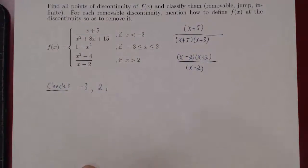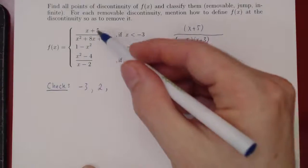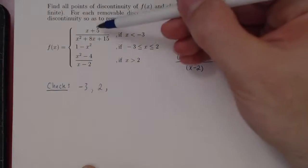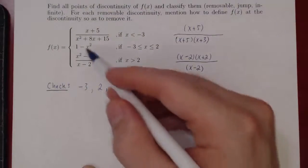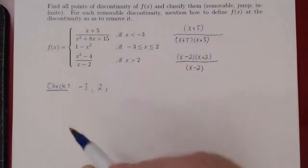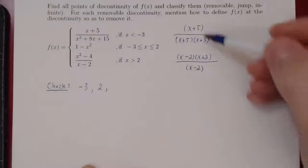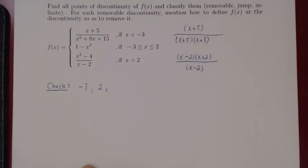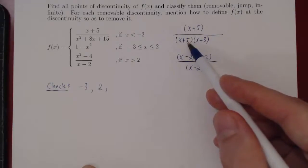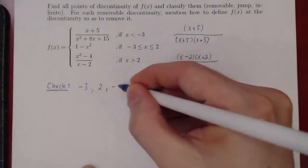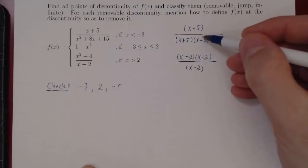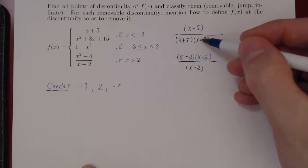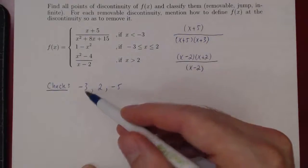Functions could also have problems of their own. The first piece is a ratio of two polynomials — since we have a division, we cannot divide by 0. When x is negative 5, we have a division by 0, so x equals negative 5 is a possible discontinuity. x equals negative 3 also makes x plus 3 equal to 0, but it's already in our list.